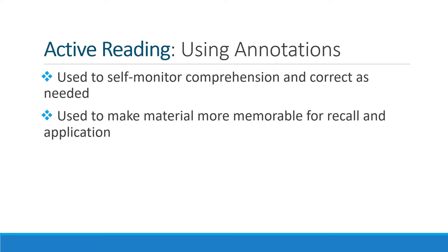Now let's talk about the second stage of the reading process, which is active reading. There are many different types of active reading strategies. Sometimes students find visualizing and drawing images of what they read to be a great tool for recall. Sometimes students will use the strikeout method, striking out information that seems irrelevant to their purpose for reading. But what we are going to look at now is a very specific method for annotating that helps students monitor comprehension and make information more memorable for recall.